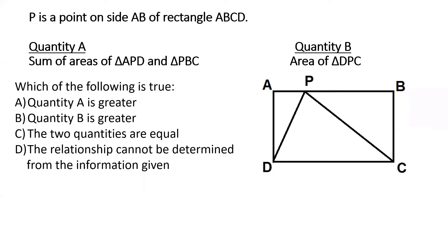P is a point on side AB of rectangle ABCD. So we have two quantities. The first quantity A is sum of areas of triangle APD and triangle PBC. And the second quantity, quantity B, is area of triangle DPC.